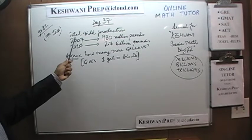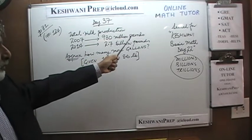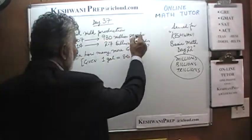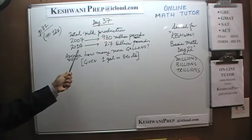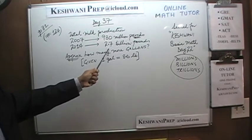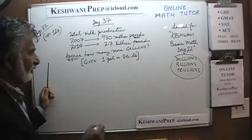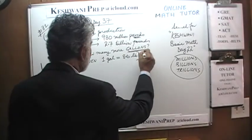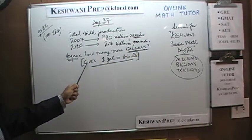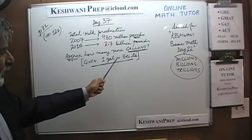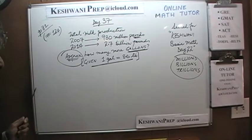The problem says that in 2007, we had a milk production of 280 million pounds. Then in 2014 — in seven years' time — the production was 2.7 billion pounds. The question simply is: approximately how many more gallons do we have? Note it asks for gallons, which is why they gave us the conversion: 1 gallon equals 8.6 pounds. And they are looking for approximate, which is also very important.